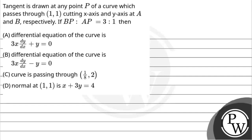Hello, let's get to the question. A tangent is drawn at any point P of a curve which passes through (1,1), cutting the x-axis and y-axis at A and B respectively. If BP is 2 and AP is 3:1, then option A: differential equation of the curve is 3x dy/dx plus y plus 2 = 0, option D: differential equation is 3x dy/dx minus y plus 2 = 0, option C: the curve is passing through (1/8, 2), option D: normal at (1,1) is x plus 3y plus 4.